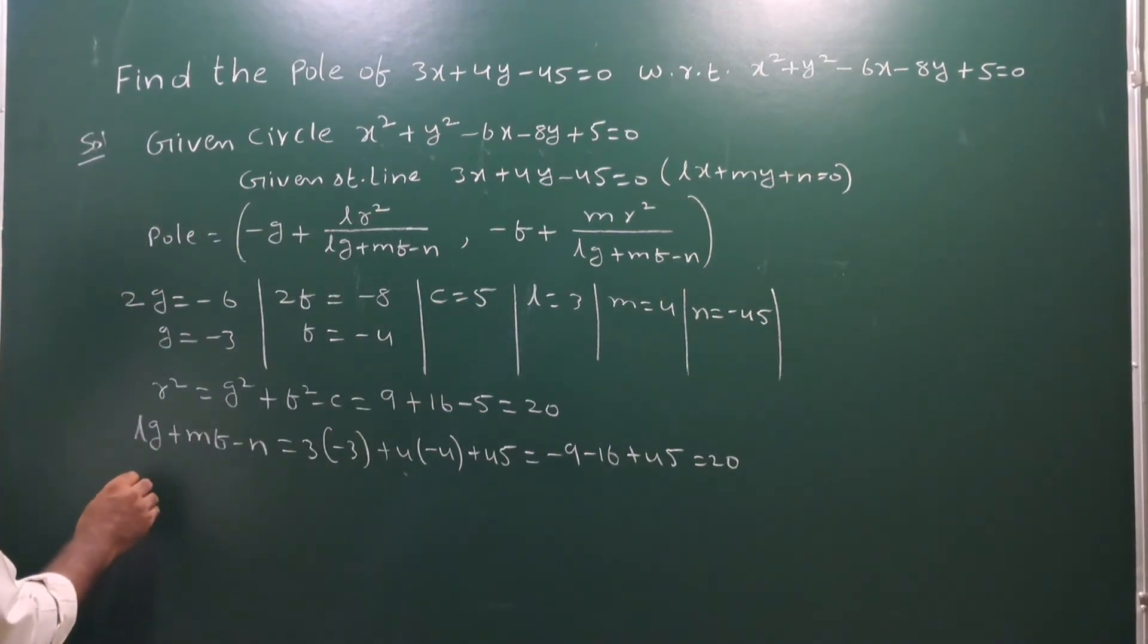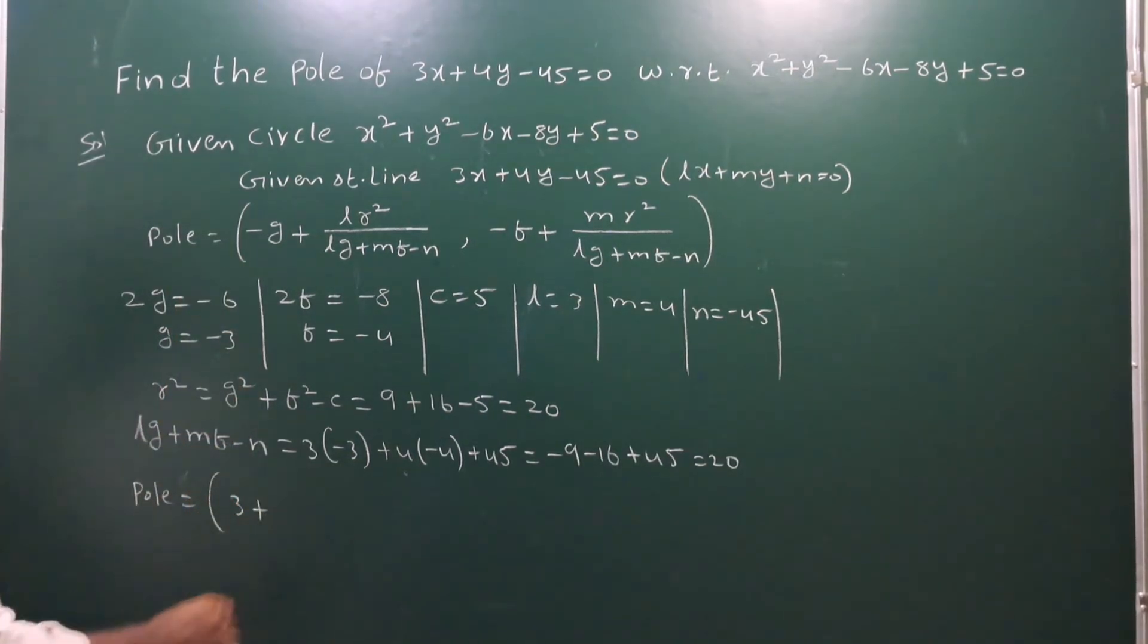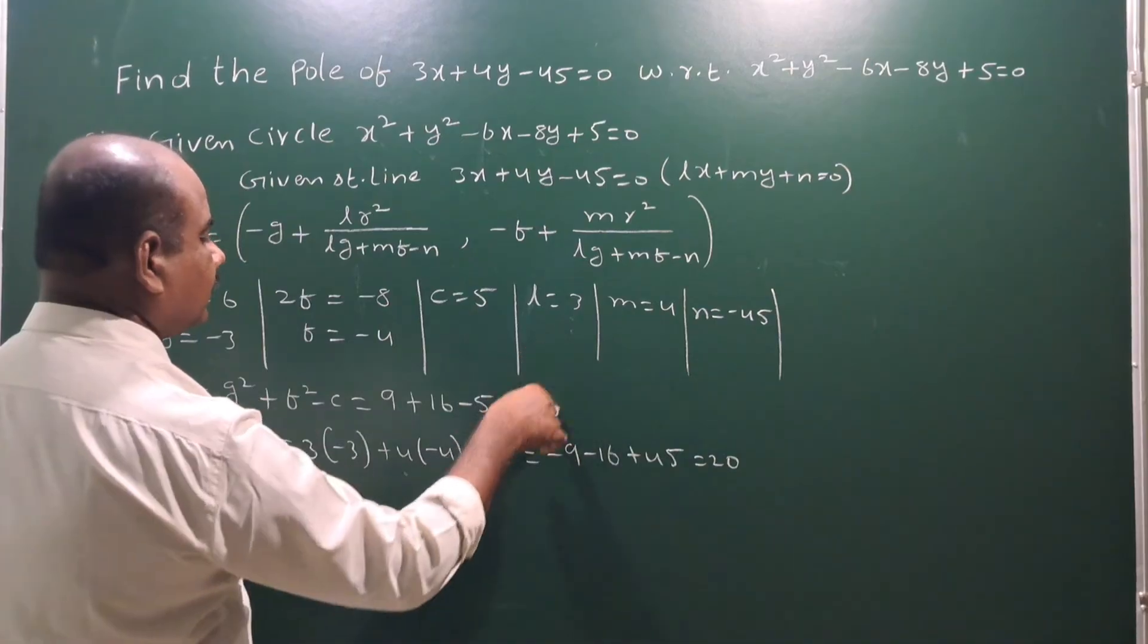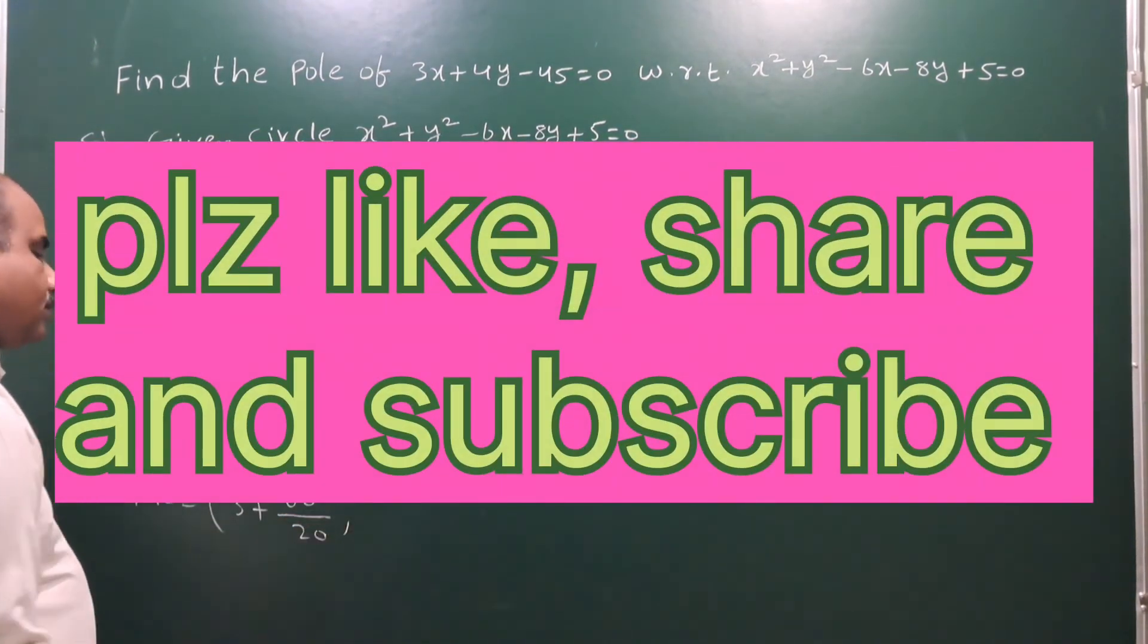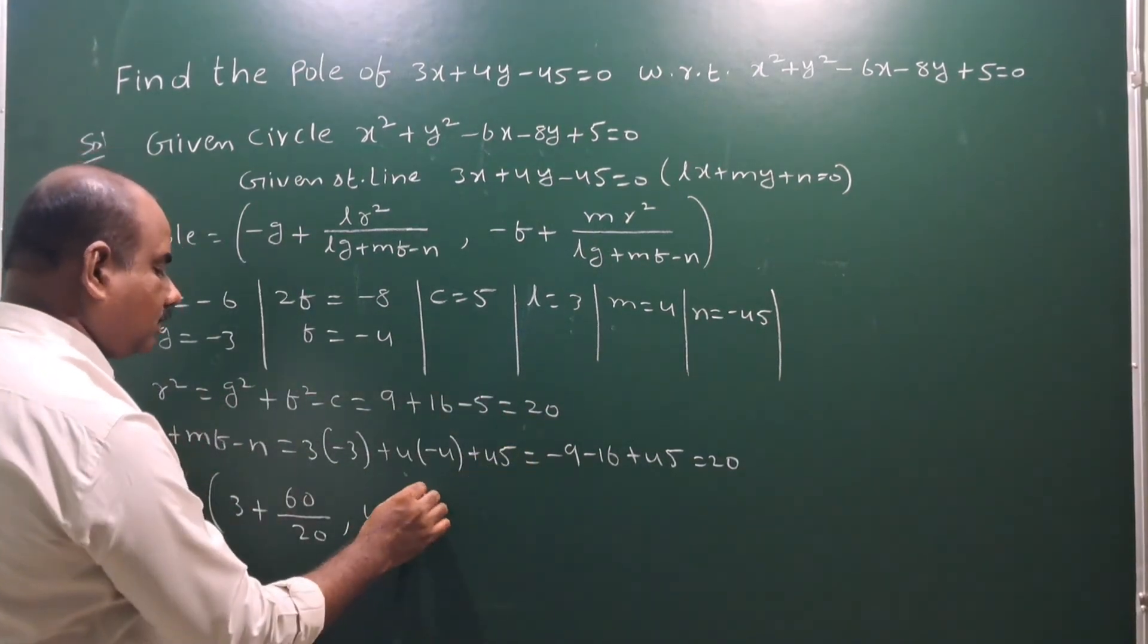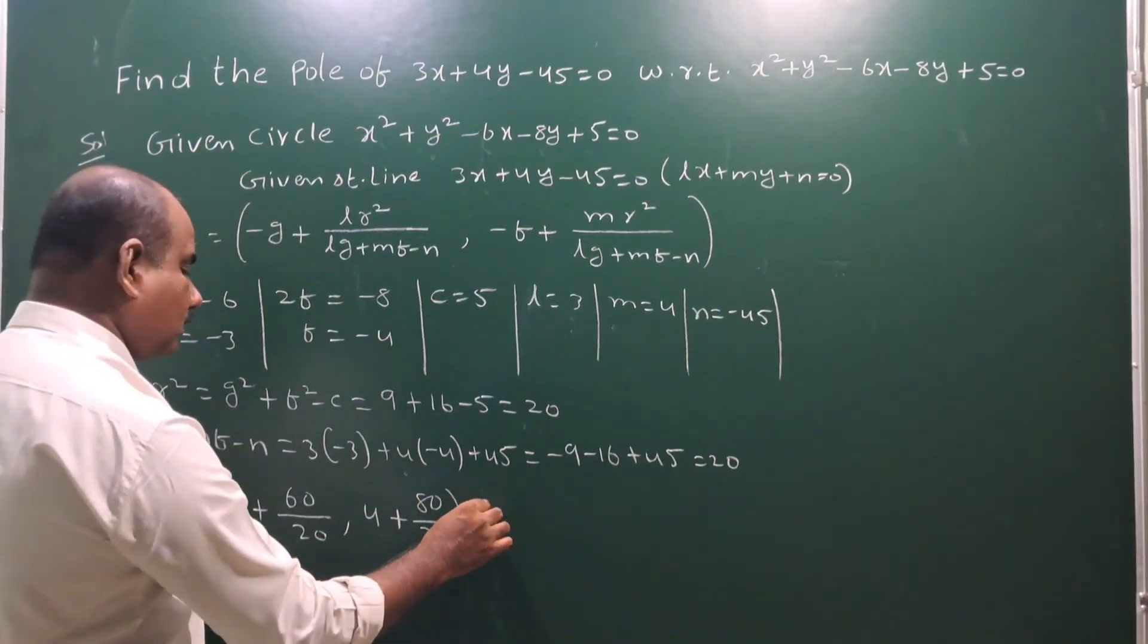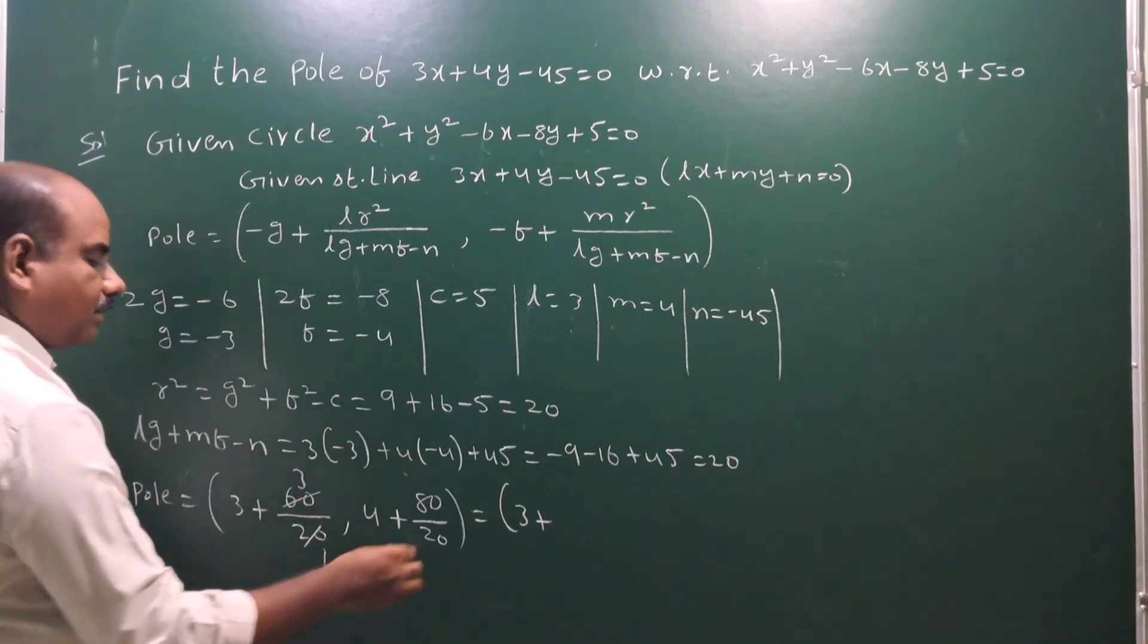Therefore pole, pole equals minus g, g is minus 3, so minus g is plus 3 plus lr squared, l is 3, r squared is 20, so 60 by lg plus mf minus n which is 20. Next minus f, f is minus 4, so plus 4 plus mr squared, m is 4, r squared is 20, so 80 by 20.